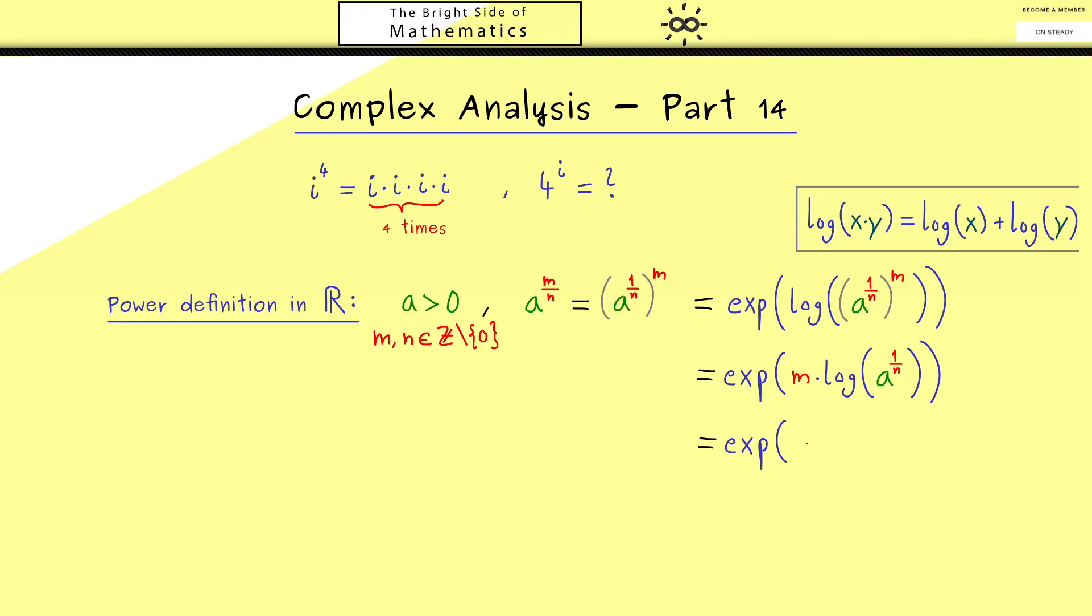More concretely, we have the exponential function of m over n times the logarithm of our base a. When we compare the left-hand side with the right-hand side, we recognize a very nice relation: the base goes into the logarithm and the exponent comes in front. Please note this identity holds for every rational number.